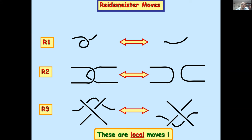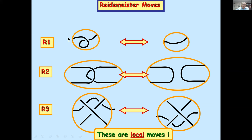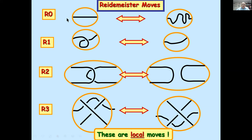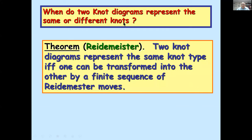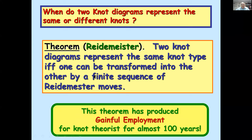These are all local moves, which will be important when we transform everything into quantum mechanics. There's also a move that is there but rarely referred to: the planar isotopy move — you're allowed to squiggle the knot any way you like. These are the famous Reidemeister moves, and now we can answer when two knot diagrams represent the same or different knots. Reidemeister's theorem: two knot diagrams represent the same knot type if and only if one can be transformed into the other by a finite sequence of Reidemeister moves. This is a most remarkable theorem — basically only three moves suffice for representing all moves of knots in three-space.